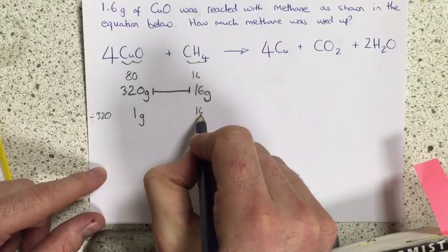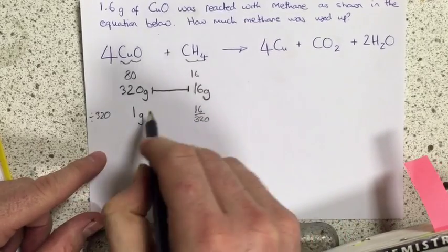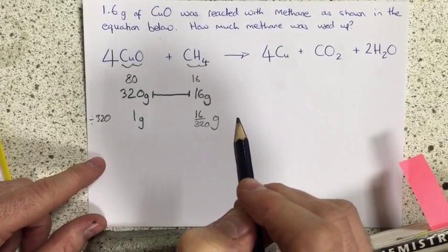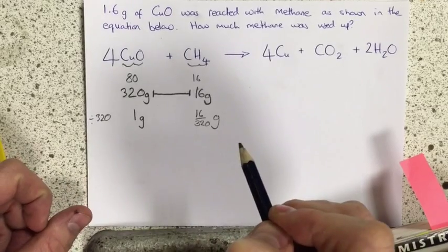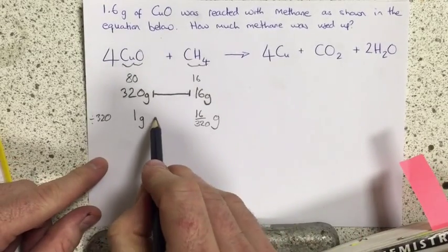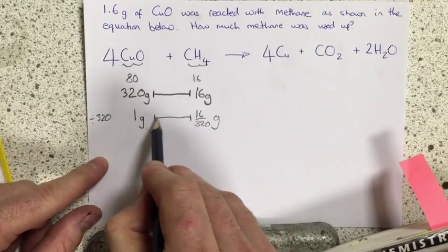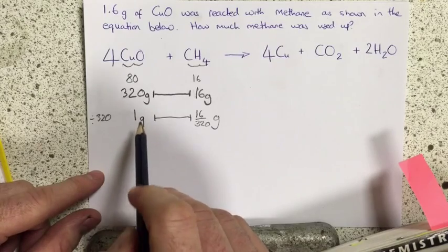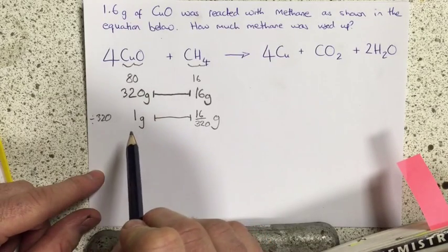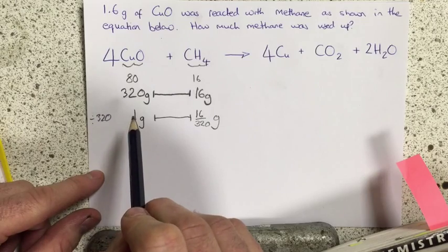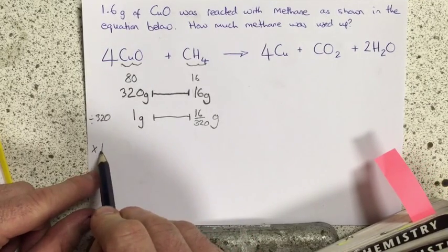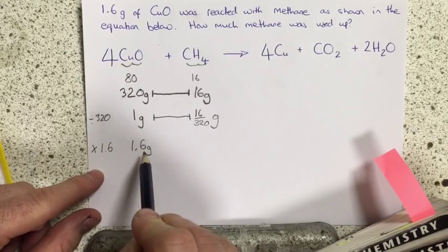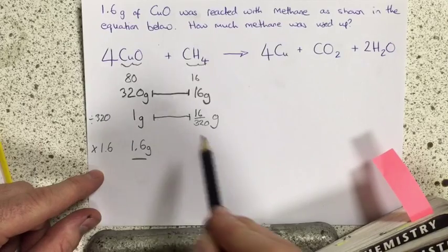So I get 16 over 320 on this side. So 1 gram of copper oxide would react with 16 over 320 grams of methane. You can see that I've not actually simplified this fraction yet because I'm not quite finished. Still haven't got the right amount of copper oxide on this side. I need to multiply by 1.6 and then I'll have the right amount of copper oxide on this side.